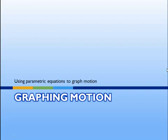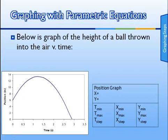Hello. Today we're going to talk about how to create graphs using your TI-83 or TI-84, specifically a type of graph called a parametric graph. The graphs we're going to make will look something like the graph below, which is the graph of the height of a ball that's been thrown into the air.